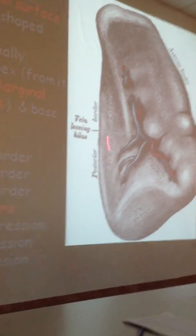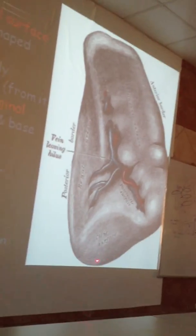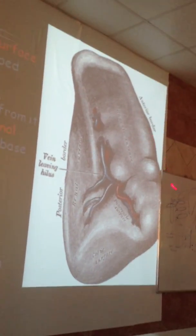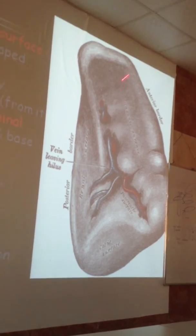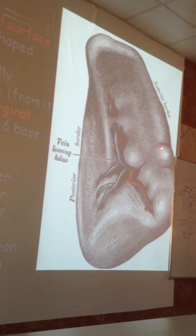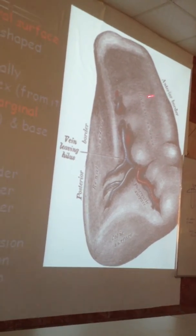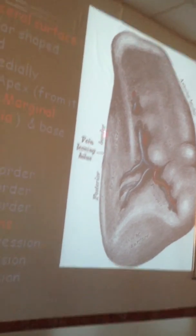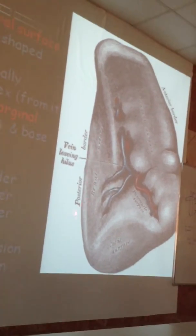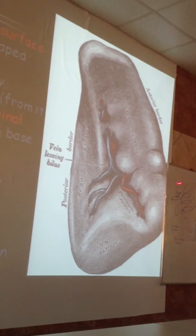The visceral surface also has three borders: the anterior border, which is also called the base; the superior border; and the inferior border. The superior border is sharp and notched, with two notches, and is directed laterally. The anterior border is smooth, rounded, and is directed medially.